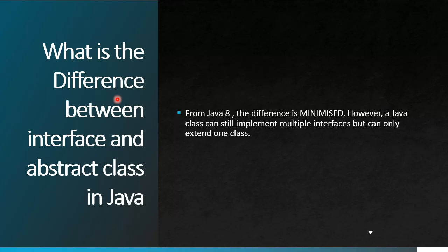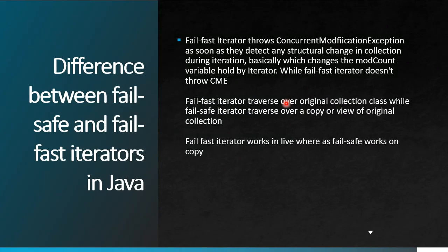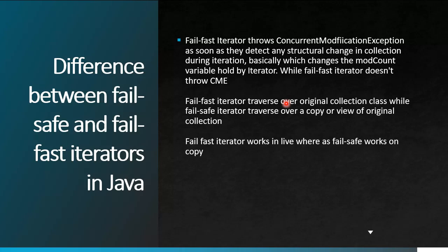The next question is the difference between fail-fast and fail-safe iterators in Java. As the name suggests, fail-fast fails immediately. A fail-fast iterator throws a ConcurrentModificationException as soon as it detects any change on the collection being iterated. This is because it internally maintains a mod count — if anything is added or removed, the mod count changes, signaling a problem, and the exception is thrown immediately.